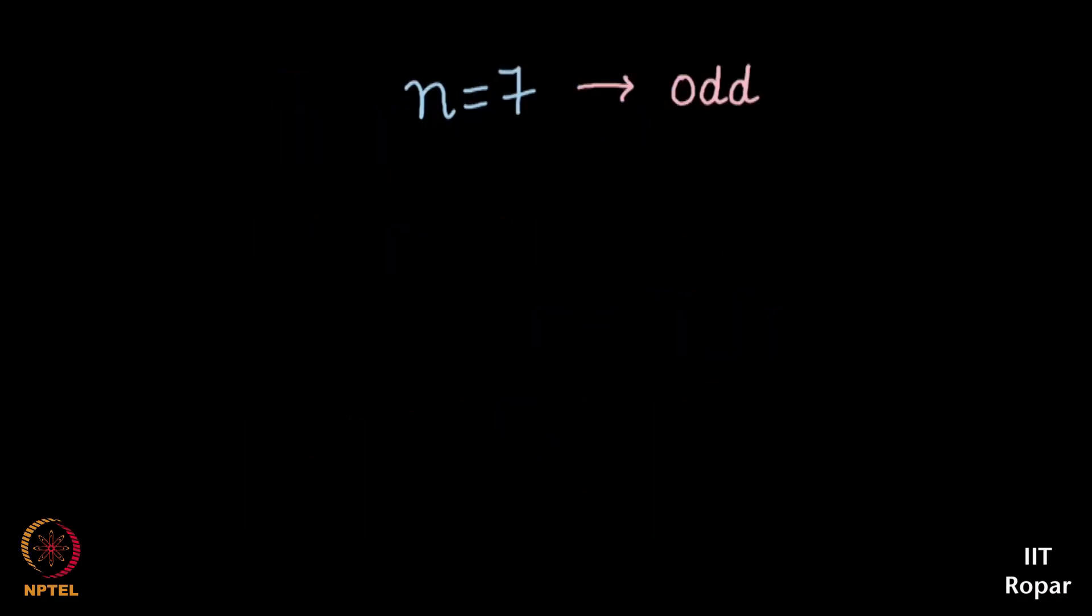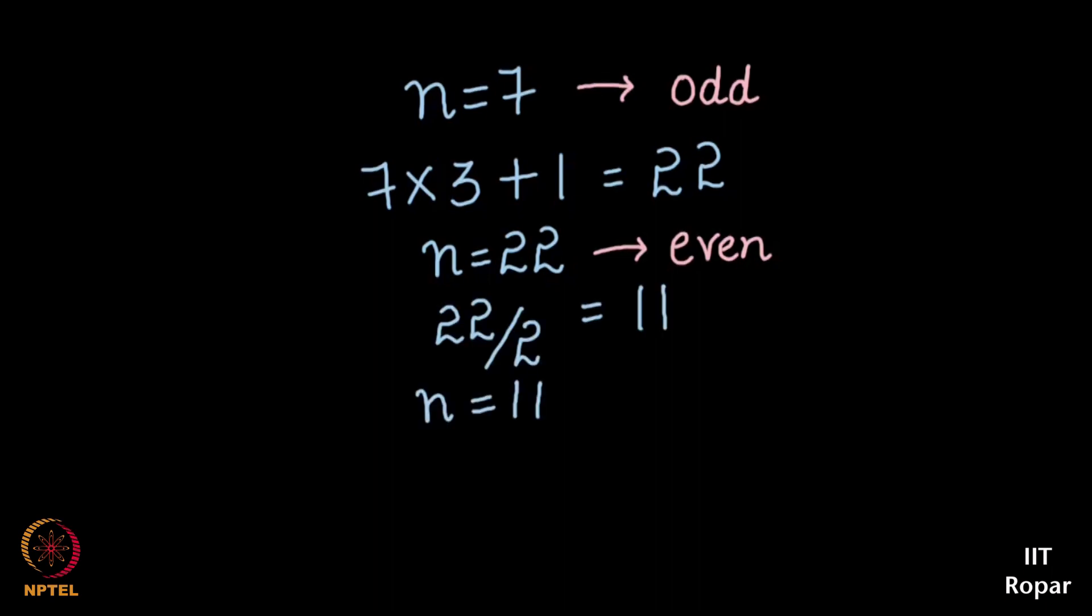Let's say we start with n equals 7, so 7 becomes into 3, 21, plus 1, 22. 22 is an even number, so you should half it, so 22 becomes 11. 11 becomes into 3 plus 1, 34.